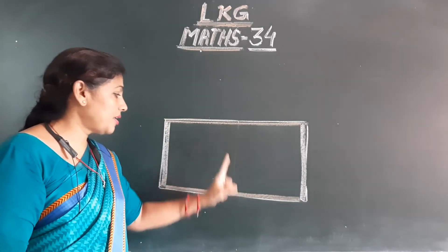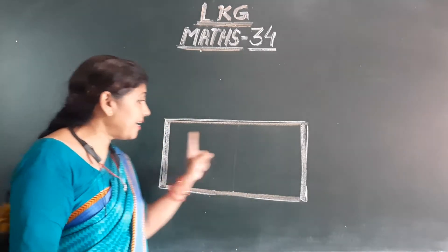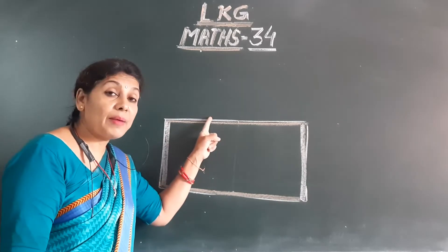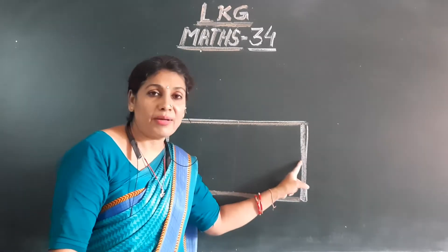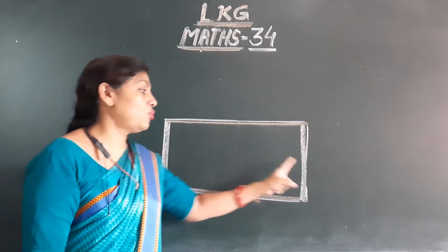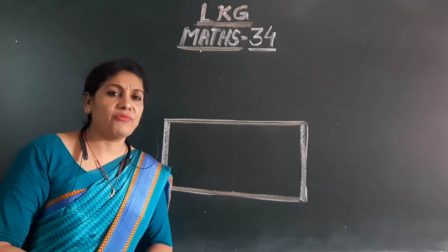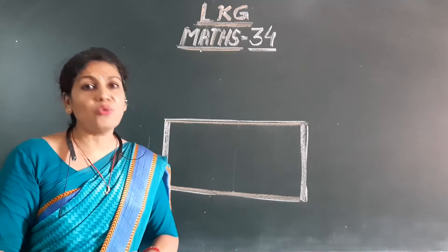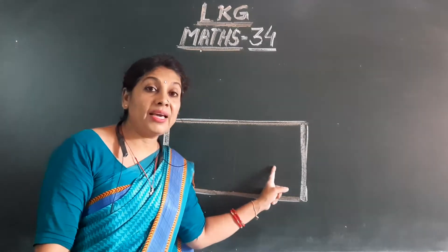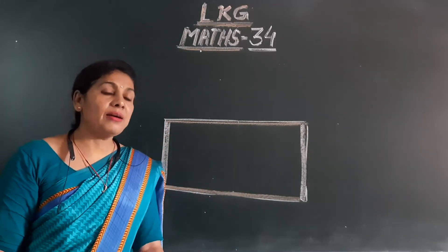That means the upper and lower lines are equal, and the side two lines are equal. But this is not equal to this one, and this is not equal to this one. That means these are two lines and these are two lines. But in square what was there? Four lines are equal. That means if we join two squares together, then it will become a rectangle. What will it become? Rectangle.